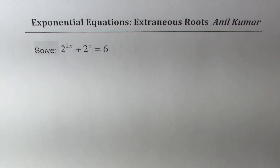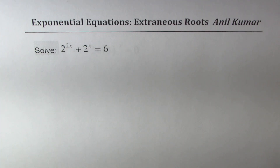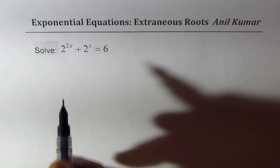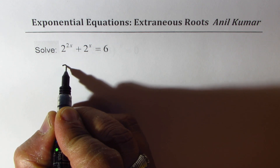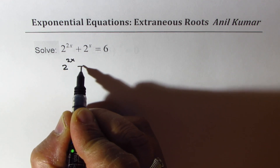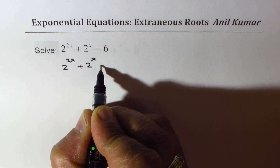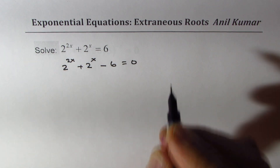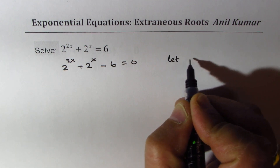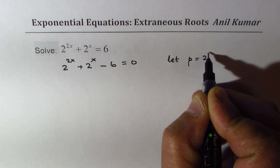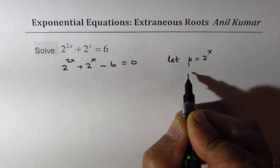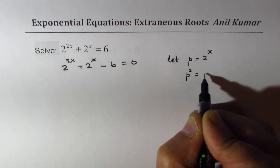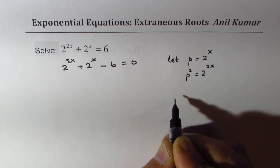Let's take up the next example: 2 to the power of 2x plus 2 to the power of x equals 6. Bringing 6 to the left, we get 2 to the power of 2x plus 2 to the power of x minus 6 equals 0. We make a substitution: let p equal 2 to the power of x, so p squared equals 2 to the power of 2x.